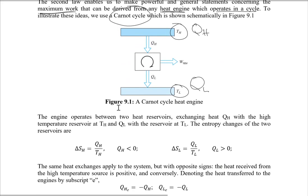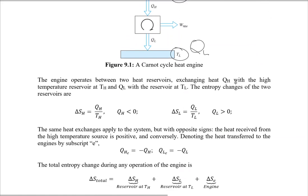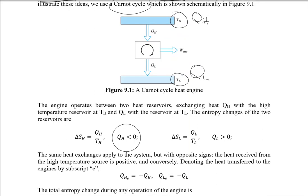The heat engine operates between two heat reservoirs, exchanging heat Q_H with the high-temperature reservoir T_H and Q_L with the low-temperature reservoir T_L. The entropy change of the high-temperature reservoir is ΔS_H = Q_H / T_H, where Q_H is less than zero since heat is being extracted. The entropy change of the low-temperature reservoir is ΔS_L = Q_L / T_L, where Q_L is greater than zero since heat is being rejected to it.